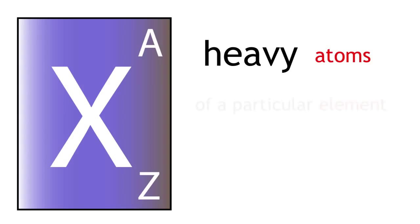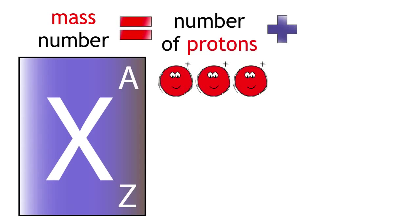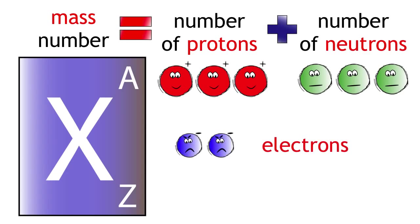But sometimes you can find heavy atoms of a particular element. These atoms have a higher mass number. The mass number is equal to the number of protons plus the number of neutrons. We can ignore the electrons as their mass is so tiny.